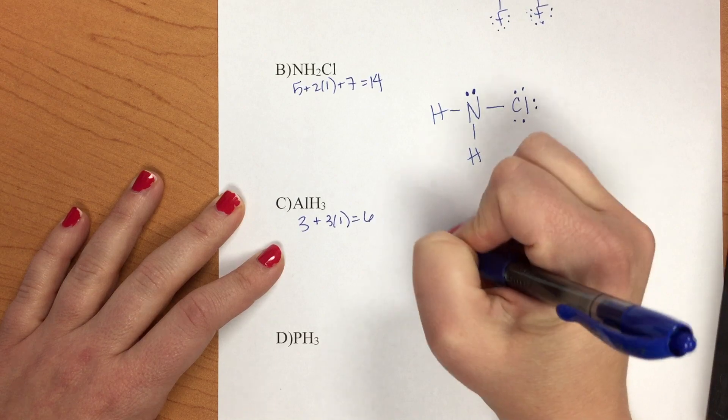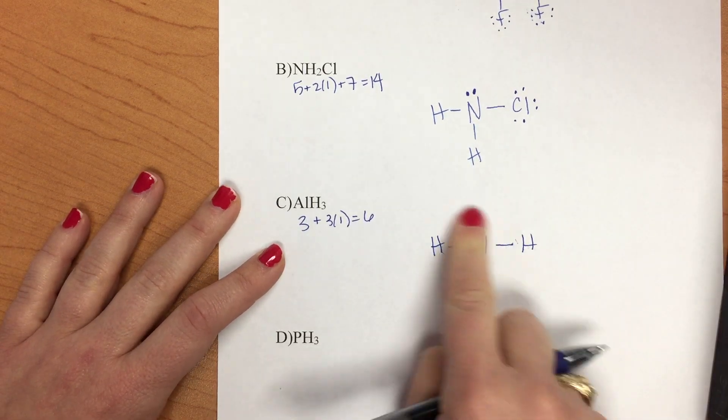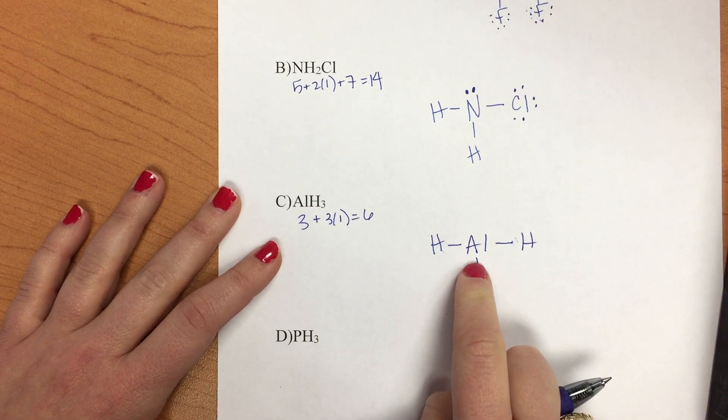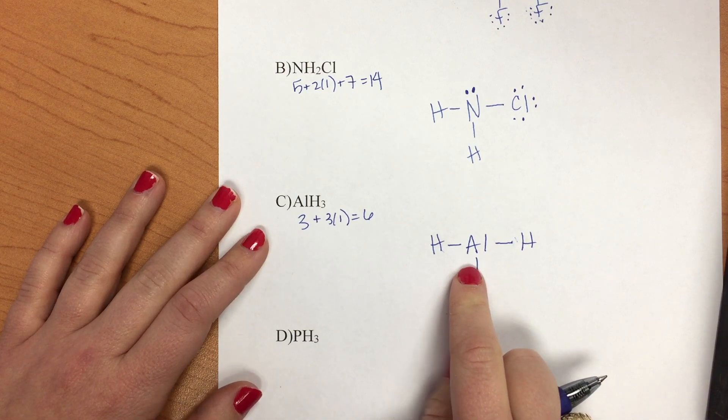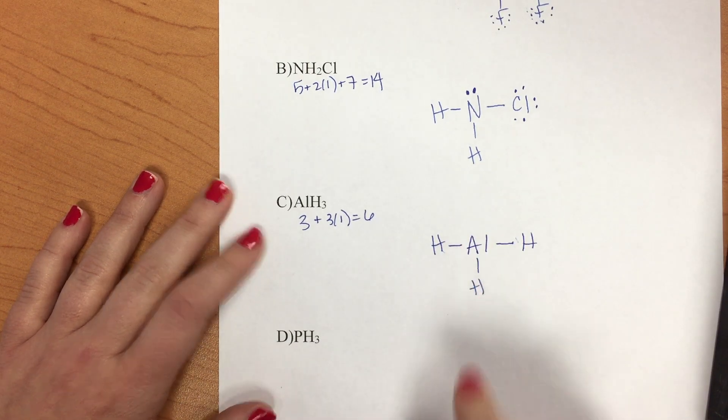So we're going to create octet all the way around: 2, 4, 6. We have satisfied this. Remember, aluminum is one of the few that does not have enough electrons to make octet. So its octet is actually 6.